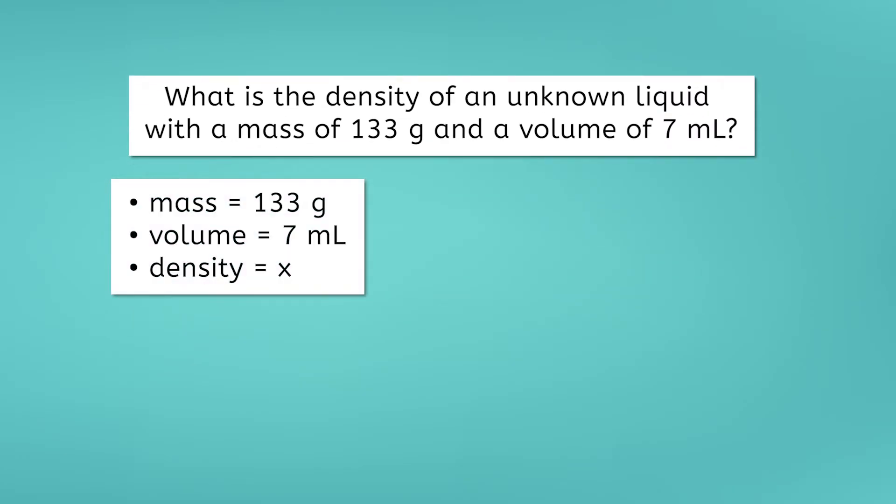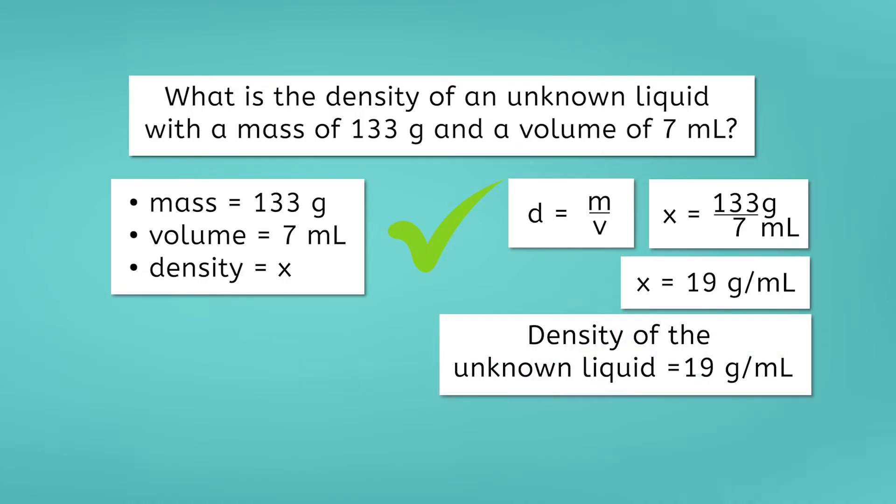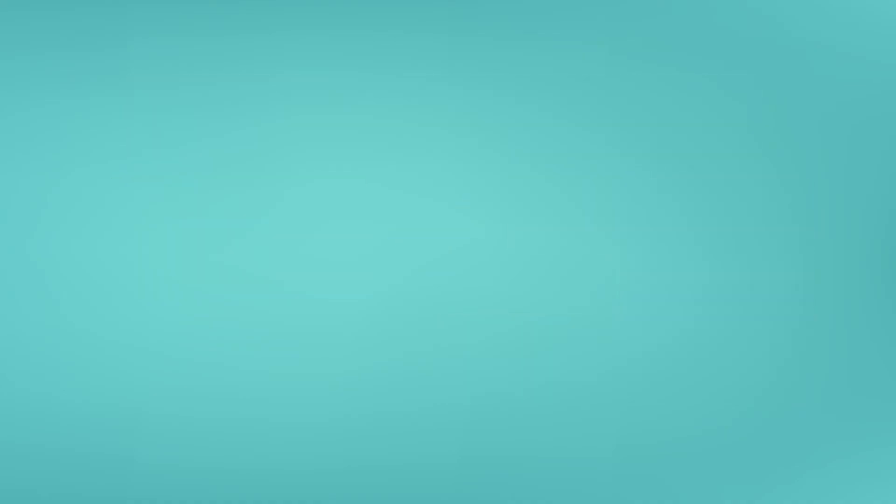Now, let's write our density formula. Check our units. Do we have grams for mass and milliliters or centimeters cubed for volume? Yes, we do. So we can now go ahead and solve. Let's plug our values into the density formula. x is equal to 133 grams divided by 7 milliliters. Finally, we use a calculator to solve the problem. We find that x equals 19 grams per milliliter, which means the density of our unknown liquid is 19 grams per milliliter.